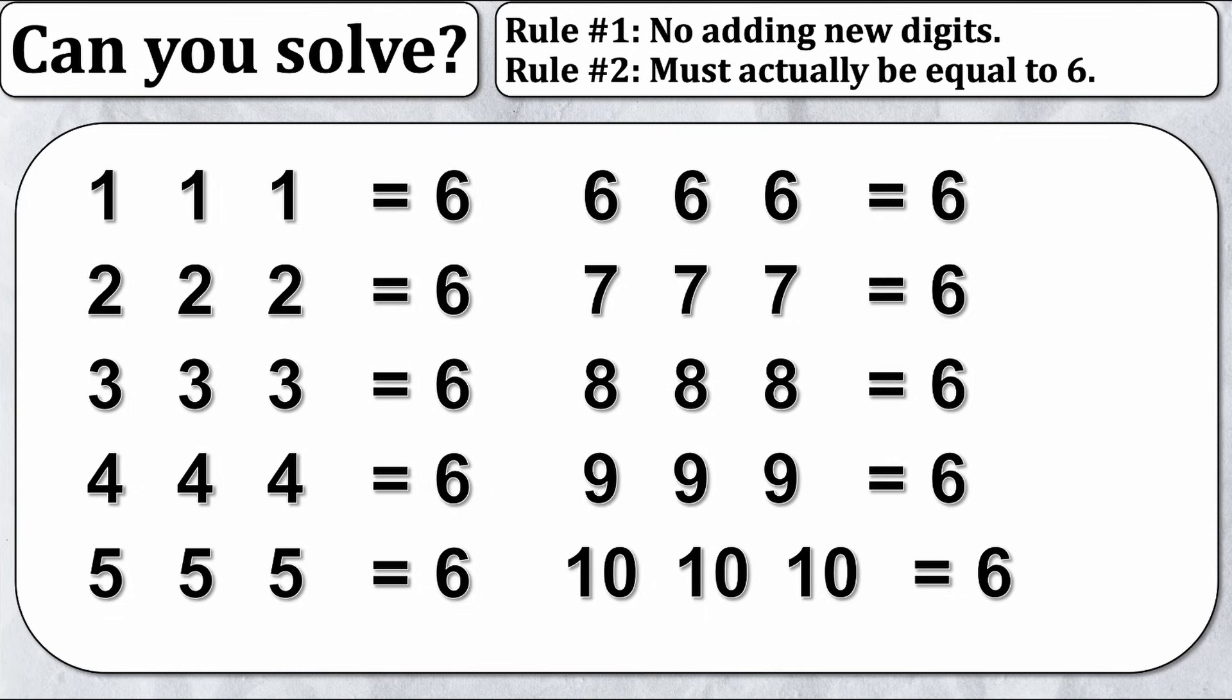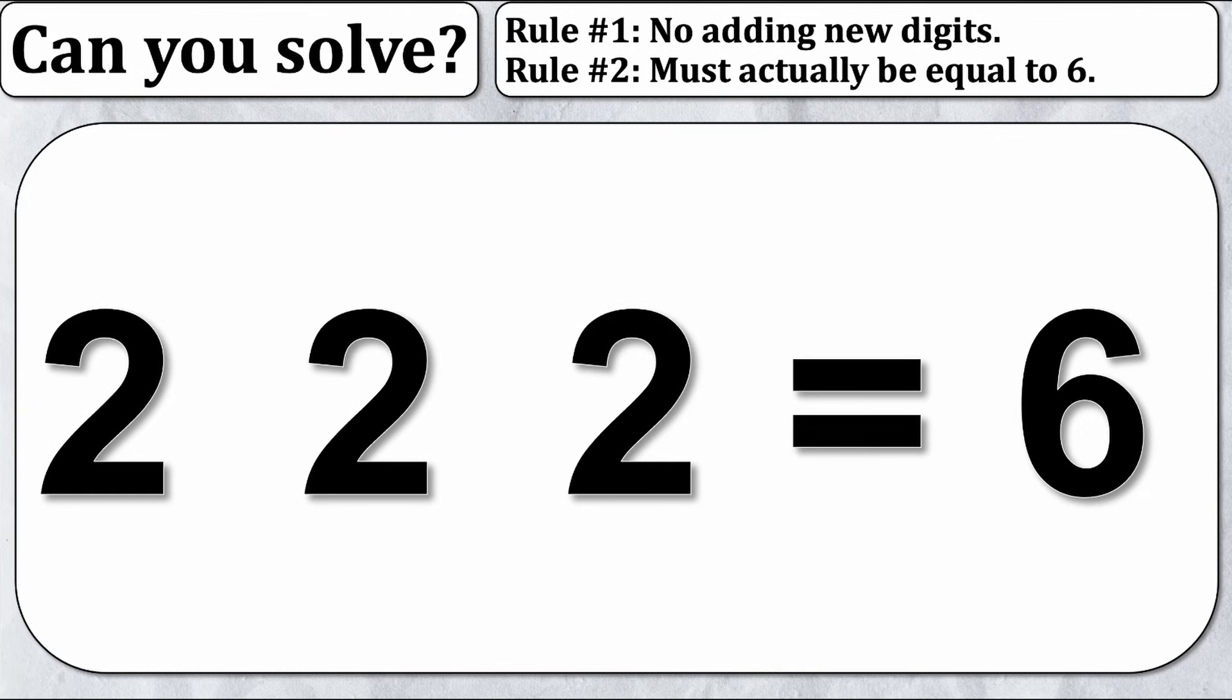Let's start with the easiest one, two. The reason this is the easiest one is because two plus two plus two is equal to six. Nothing crazy going on here.